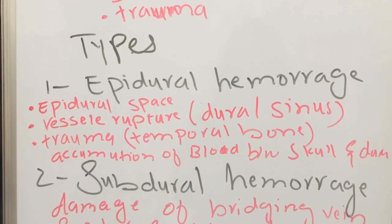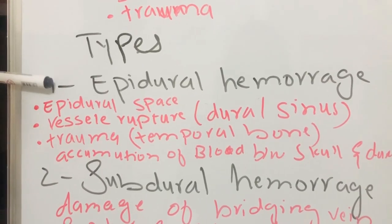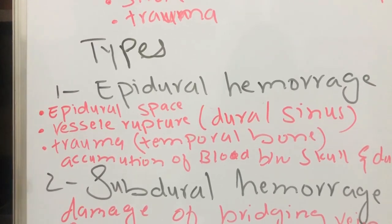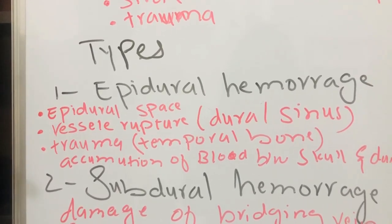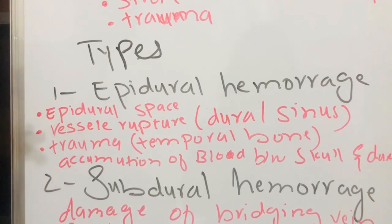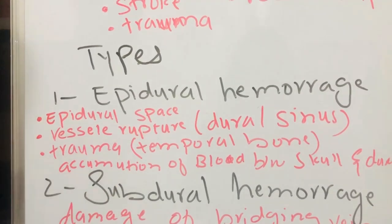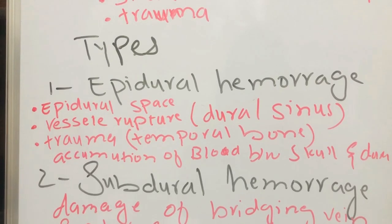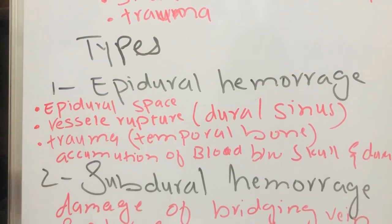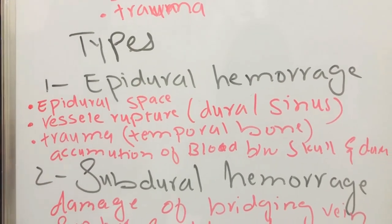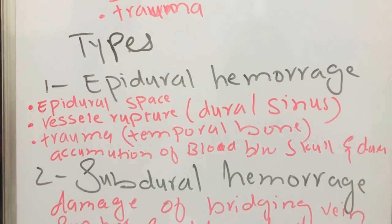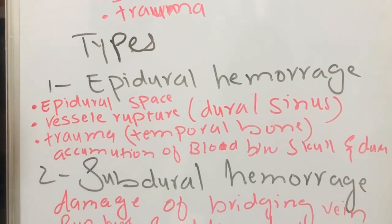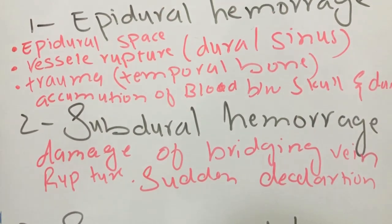First is epidural hemorrhage, which occurs in the epidural space. It is due to the rupture of a vessel, specifically in the dural sinus. The reason for epidural hemorrhage is trauma injury to the temporal bone, which causes accumulation of blood between the skull and the dura mater.